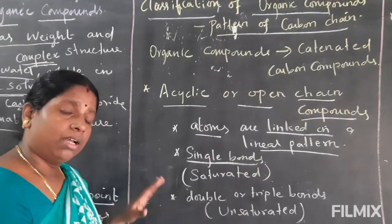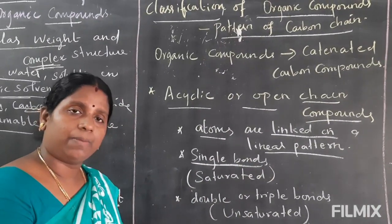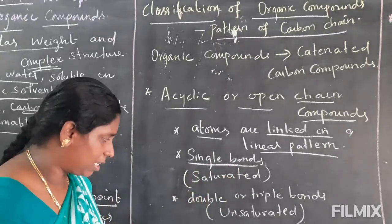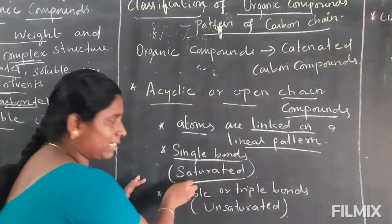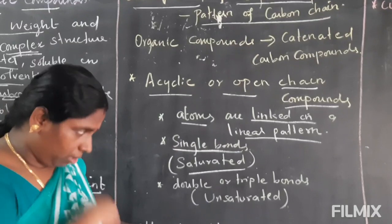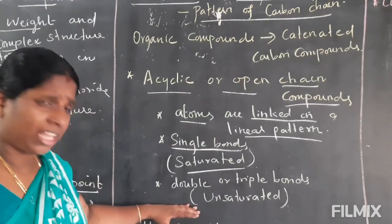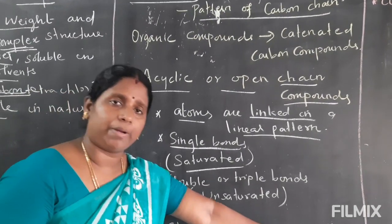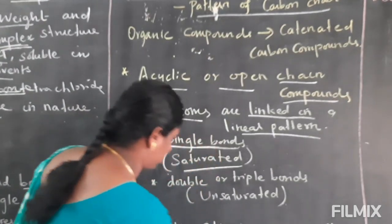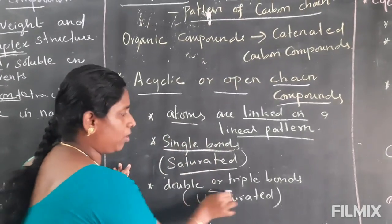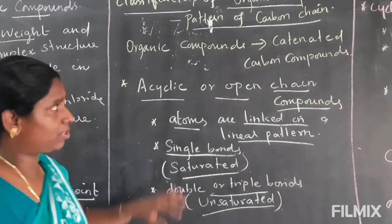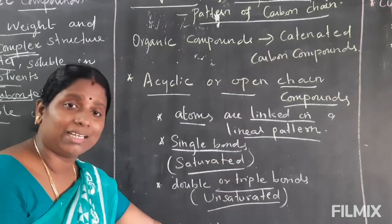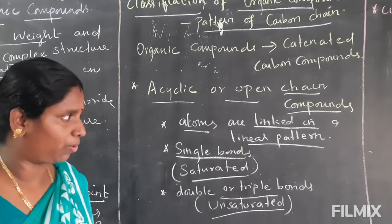In open chain compounds, single bonds, double bonds, or triple bonds can be present. If it is a single bond only, then we call it saturated. If the compound has double or triple bonds, then it is unsaturated. So double or triple bond means unsaturated. Acyclic or open chain compounds have a linear pattern of carbon chain.